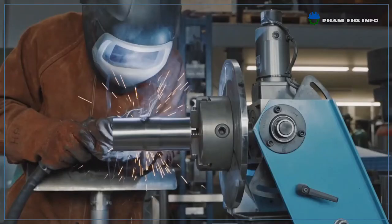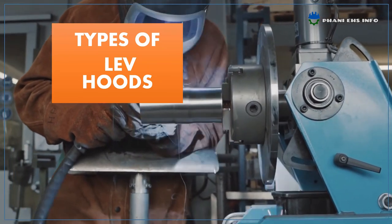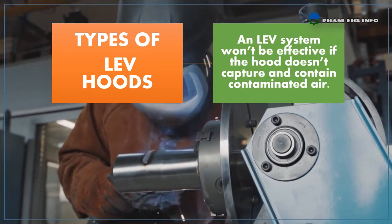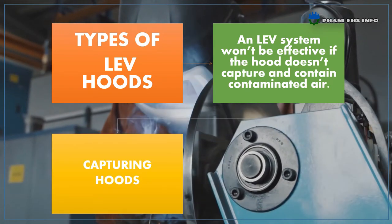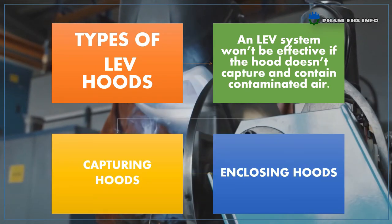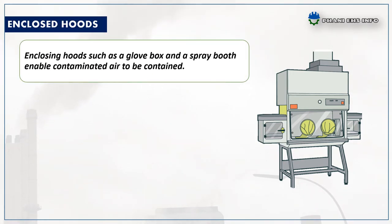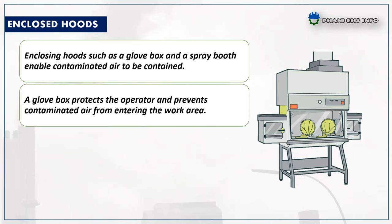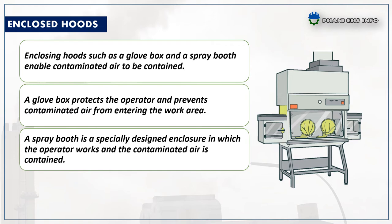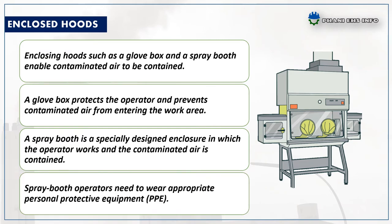Types of LEV hoods. An LEV system won't be effective if the hood doesn't capture and contain contaminated air. There are two types of hoods: capturing hoods and enclosing hoods. Enclosing hoods such as a glove box and spray booth enable contaminated air to be contained. A glove box protects the operator and prevents contaminated air from entering the work area. A spray booth is a specially designed enclosure in which the operator works and contaminated air is contained. Spray booth operators need to wear appropriate personal protective equipment.